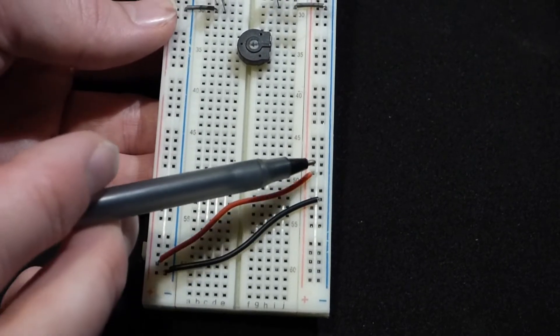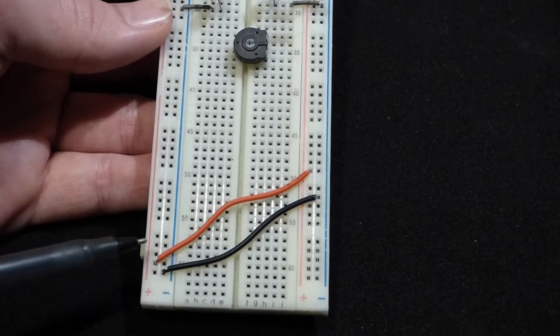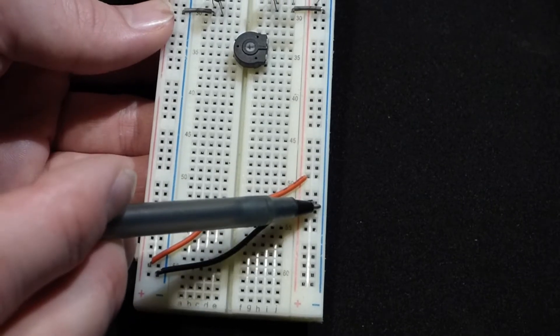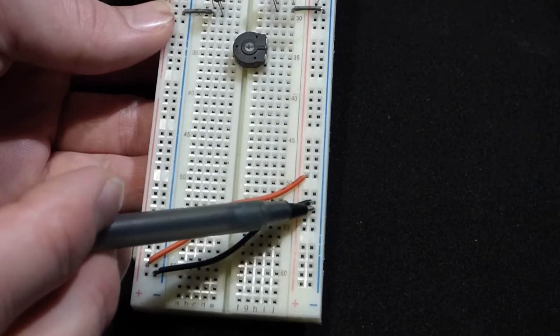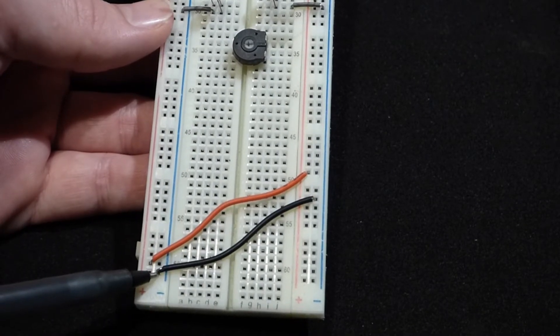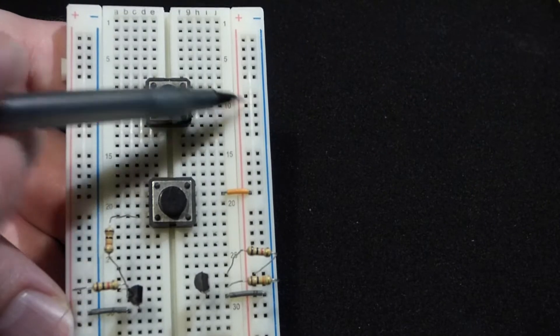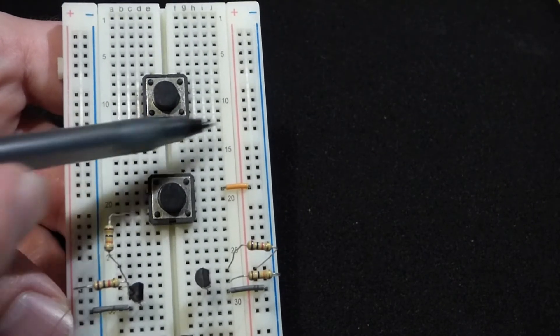And also I want to mention that the positive rail on that side is connected to the positive rail on that side by the red jumper, and the negative rail, the ground, is connected that rail to that rail by this jumper. So I can plug the battery into either side here and it will power both sides.